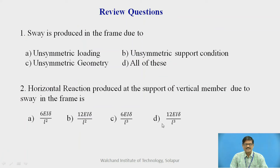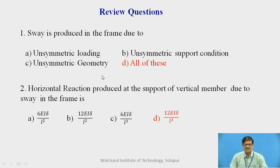Before we proceed further, let us take a review question. First question: sway is produced in the frame due to — four options are given, identify the correct one. Second question: horizontal reaction produced at the support of vertical member due to sway in the frame is — again four options are given. Take a pause and resume the video. The answers: sway is produced due to all options A, B, C — unsymmetry in loading, unsymmetry in support conditions, and unsymmetric geometry. The horizontal reaction produced at the support of vertical member due to sway is 12EI·Δ/L³, because the moments are 6EI·Δ/L² and after applying the equilibrium equation at the support, we get the reaction as 12EI·Δ/L³.